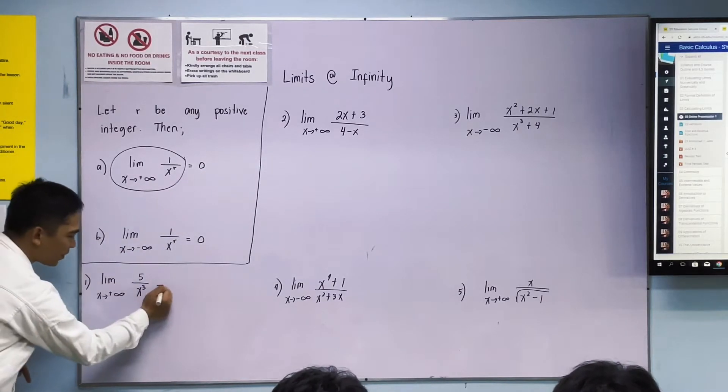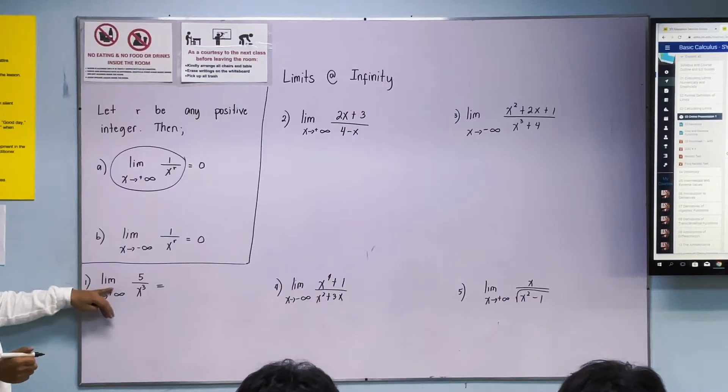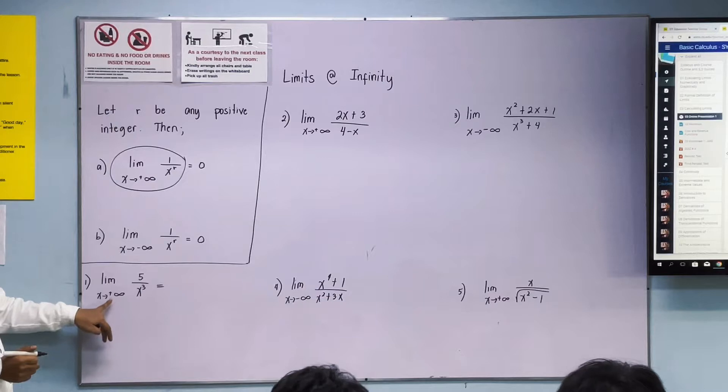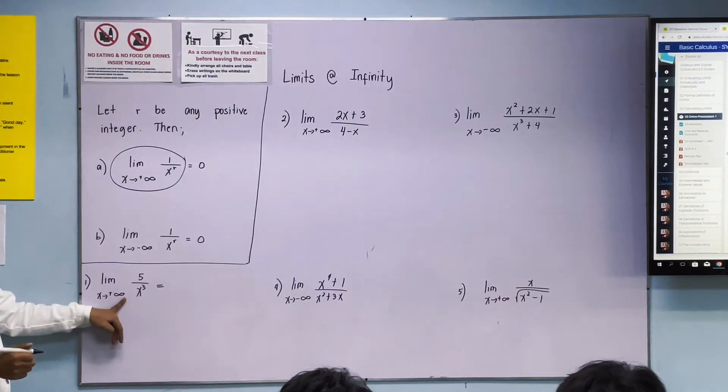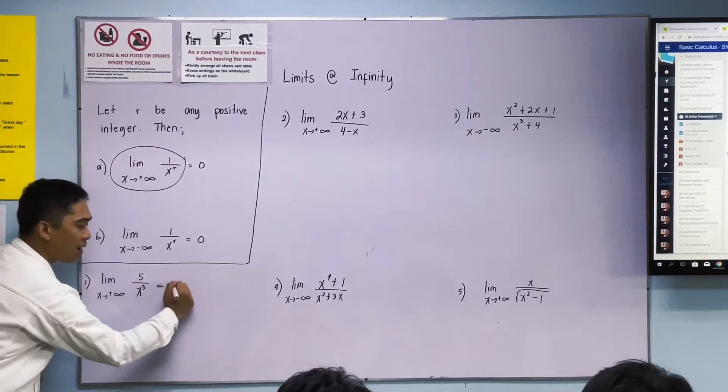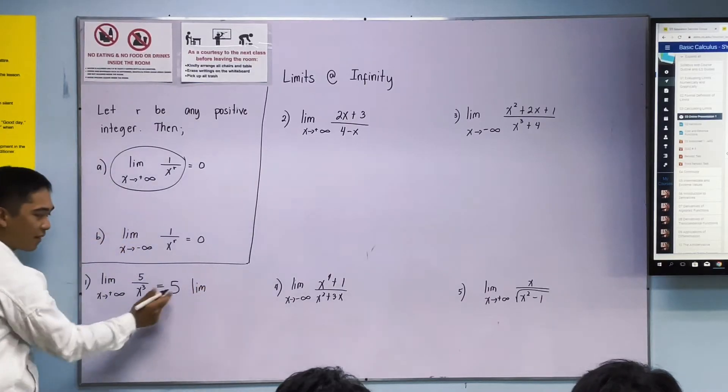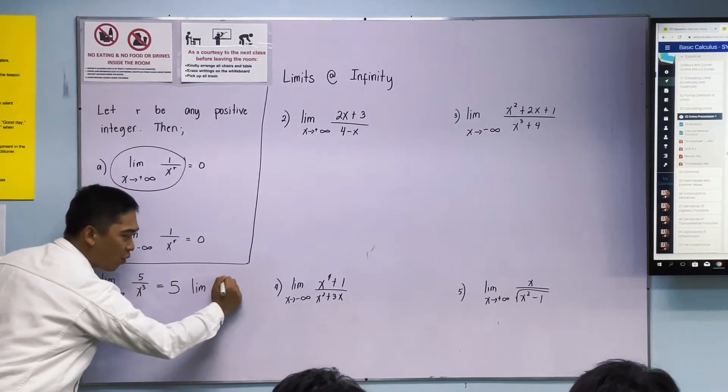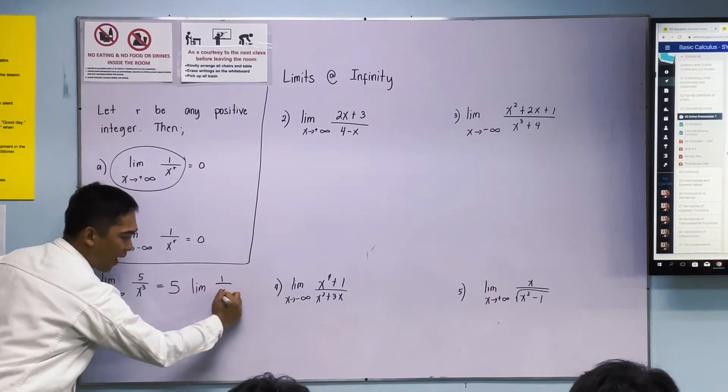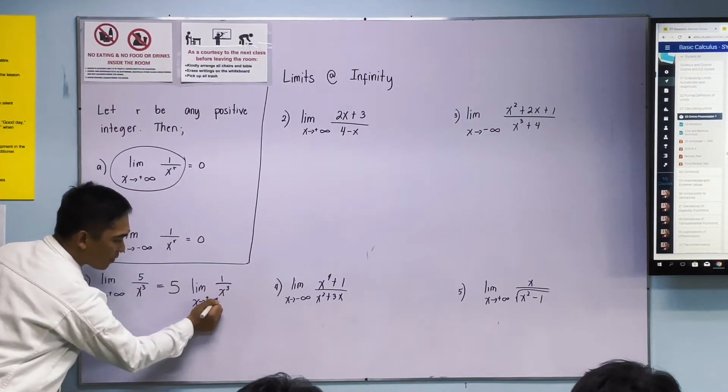To understand this, let's try number 1: limit of 5 over x cubed as x approaches positive infinity. Using the theorem we studied last week, we can write this as 5 times limit of 1 over x cubed as x approaches positive infinity.